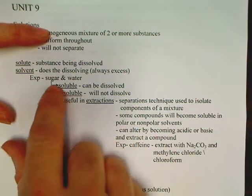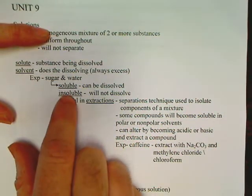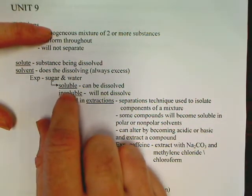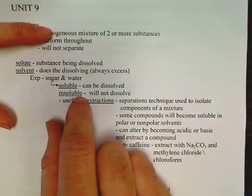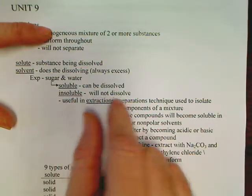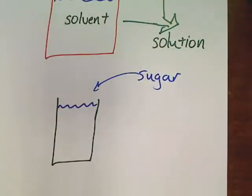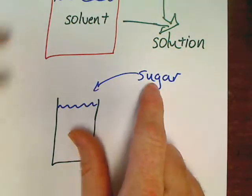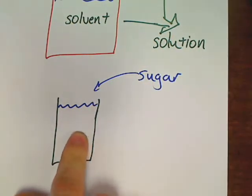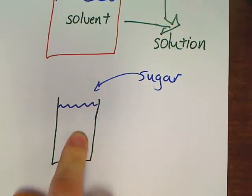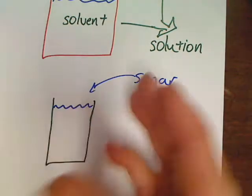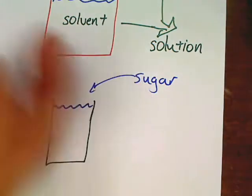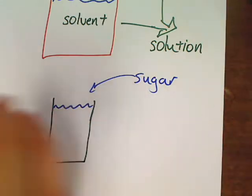When we have a test we'll have about ten multiple choice questions, and we'll have words like soluble and insoluble. Soluble just means you can dissolve something; insoluble means you cannot dissolve something in it. For example, if you throw a big hunk of Crisco into water, absolutely nothing happens — it won't dissolve at all. Some things are soluble, some things are insoluble.